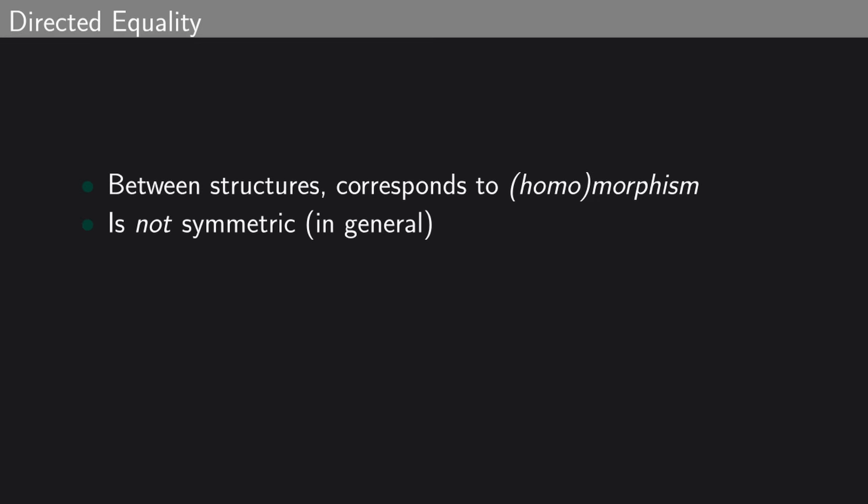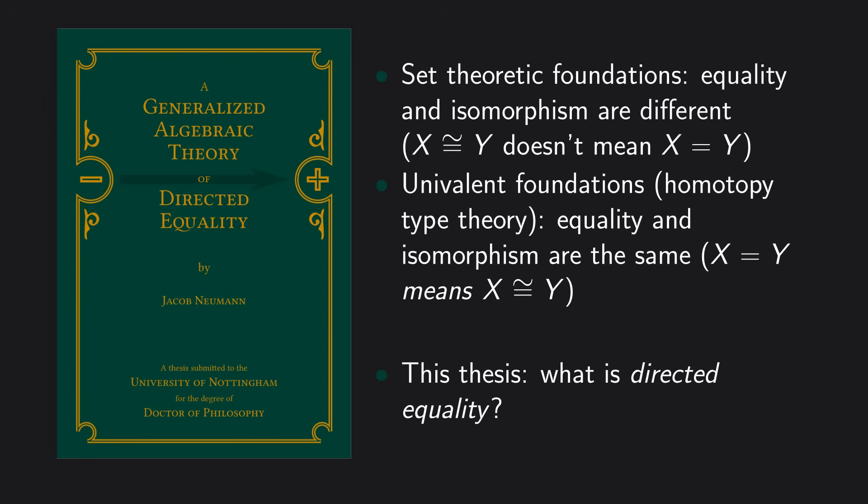X equals Y, i.e. X and Y are isomorphic, says that X is Y. But directed equality is more dynamic. X directed equals Y could mean that X becomes Y. There's a process that starts with X and ends with Y. There's a lot to be explored about this idea. This thesis is the beginnings of a precise, formal study of this relation of directed equality and an exploration of what directed equality means.